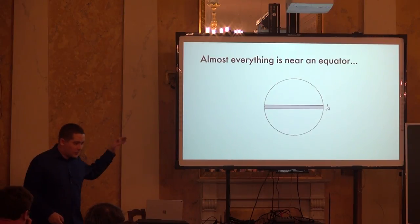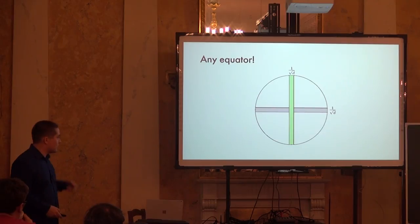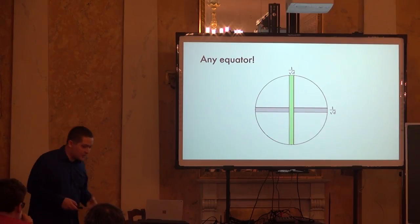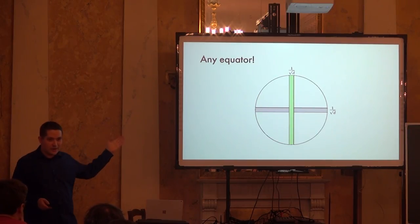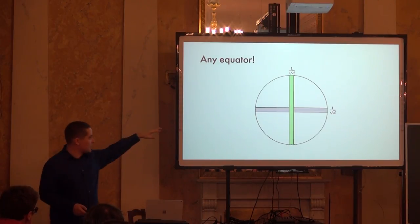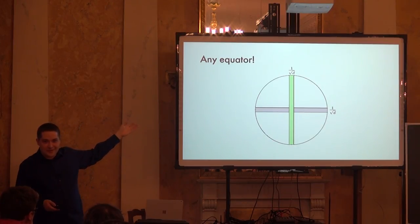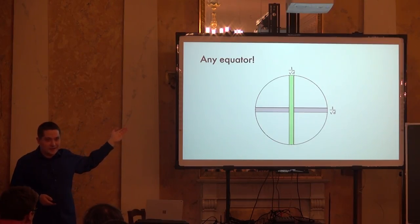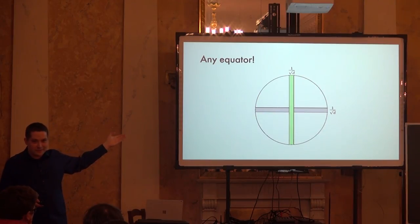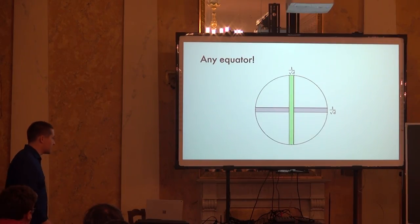Here's what makes it paradoxical: this concentration is true about any equator. Take a gray equator — basically everything is there. Take a green equator — it's also there. This is a great illustration that geometric thinking in high dimensions can be very misleading. Don't trust your geometric intuition — use analysis or probability instead.